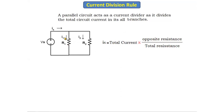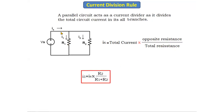To find i1 and i2, there is a formula for the current division rule. This formula is used to find each and every current. The formula is: ix — which may be i1 or i2 — is equal to the total current multiplied by the opposite resistance, divided by the sum of all the resistances. For i1, the opposite resistance is R2.